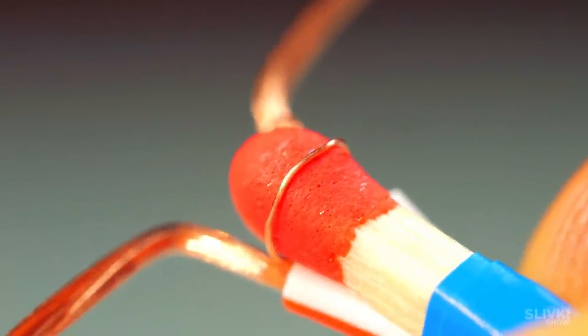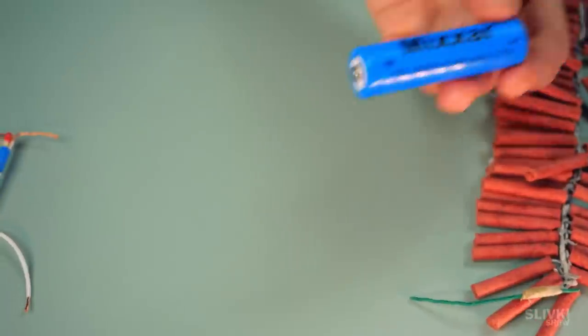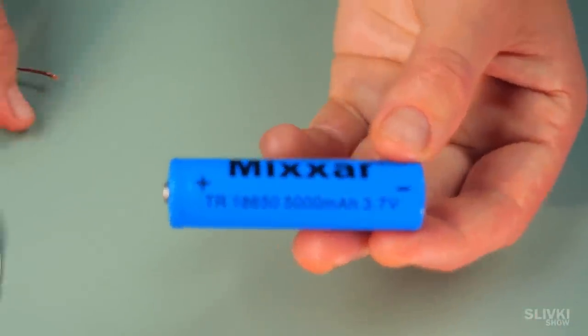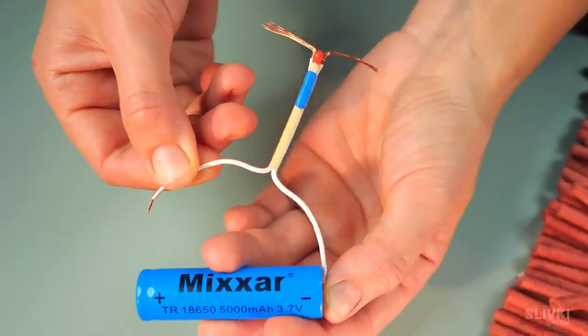But we need a power source for it to work. In this case we use a 3.7V lithium battery. Now we connect the two opposite ends of the cable to the battery and that's where the magic begins.